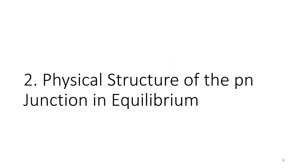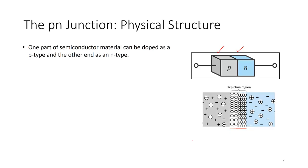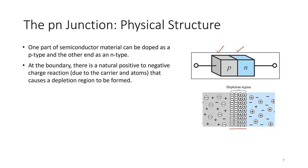Let's look at the physical structure of the PN Junction in equilibrium. Here is the PN Junction — P-type and N-type next to each other. This is not two separate materials; it is the same material where one half is doped with an acceptor and the other half with a donor. At the boundary, a depletion region forms due to a natural positive-to-negative charged reaction from carriers and atoms.